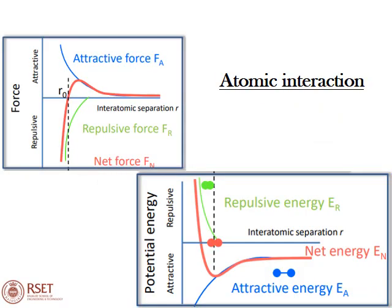Considering atomic interaction between two atoms: the nucleus has positive charge and electrons have negative charge. When two atoms are separated by a small distance, the positive nucleus of one atom is attracted by the negatively charged electrons of the other. At a certain point, the positive nucleus of one atom and the positive nucleus of the second atom begin to repel each other, creating a repulsive force as the distance between atoms reduces.